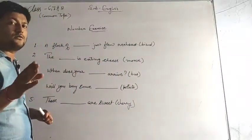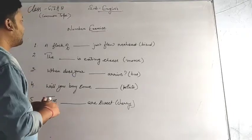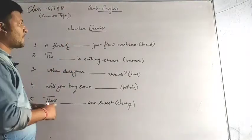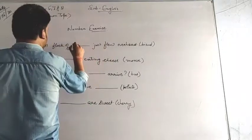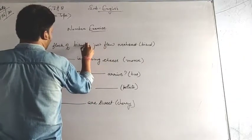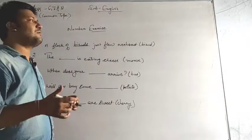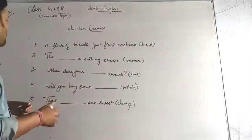So a flock of - flock means a group and my noun is bird, so I will put B-I-R-D-S to make it plural because in a group there are more than one bird.